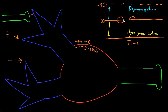But if two depolarizations happen right around the same time, their effects can add together — they have additive effects and you can get a depolarization twice the size. We call this process temporal summation, or the adding together of graded potentials in time.